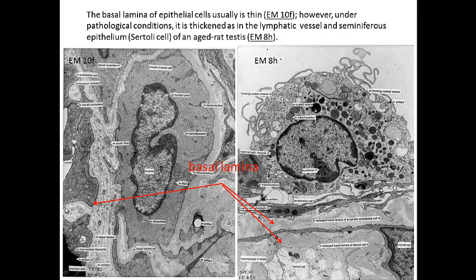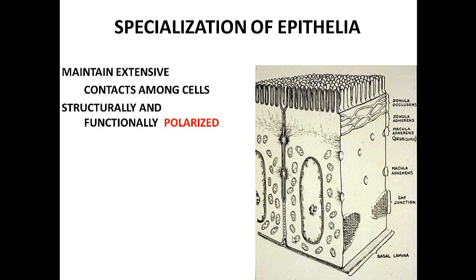Here is a little arteriole with endothelial cells in the blood vessel and smooth muscle cells outside. We can see a very nice basal lamina going around these cells. Usually the basal lamina is very thin, but sometimes it can be thick. Here an endothelial cell has a thick basement membrane. The basal lamina is quite prominent in the case of a Sertoli cell — a nurse cell in an aged rat testis — where you can see a thickening of the basal lamina.